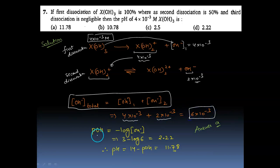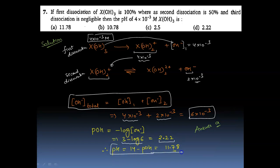To find pOH = −log[OH⁻] = −log(6×10⁻³) = 3 − log 6 = 2.22. To find pH, we subtract from 14: pH = 14 − pOH = 14 − 2.22 = 11.78. Hence for this question, the answer is A.